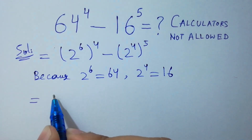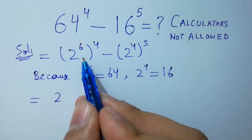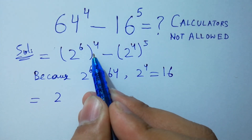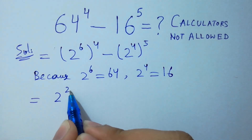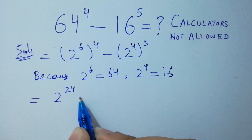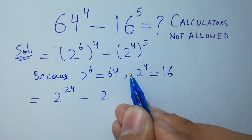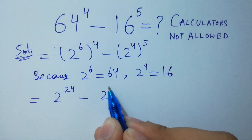Next step: 2 to the power 6 times 4 equals 24, minus 2 to the power 4 times 5, which is 20.